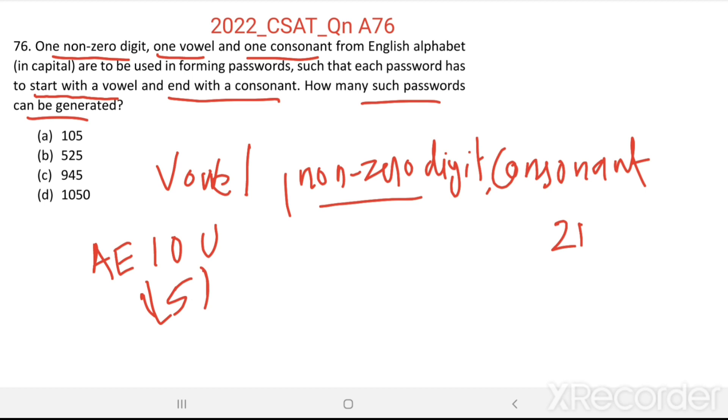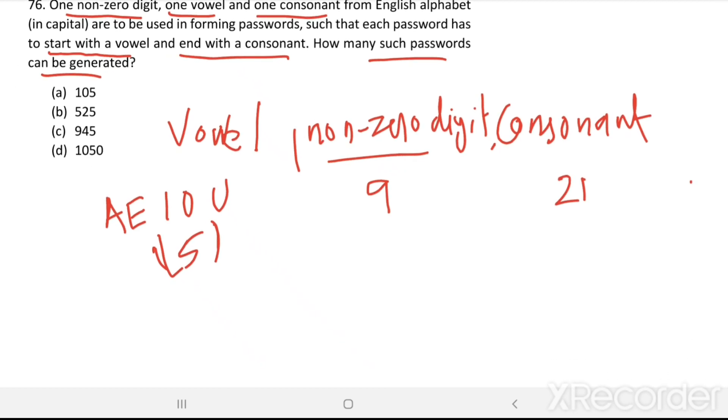Then non-zero digits: there are total ten digits, we are just removing zero, then nine digits. Then one of such passwords is, let us take one vowel from here A, one non-zero digit 1, and one consonant that is B. A 1 B is one of such passwords.